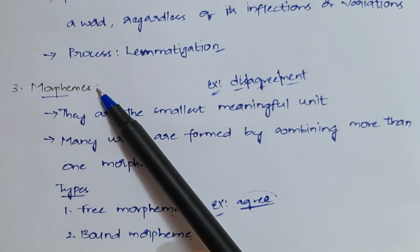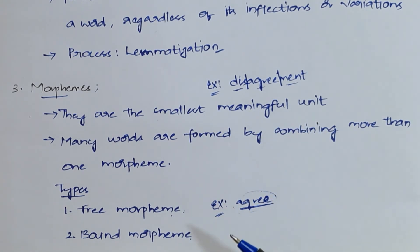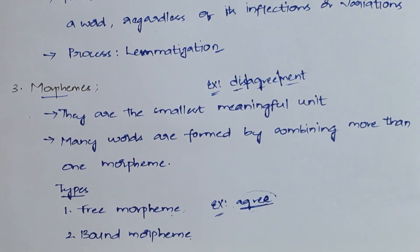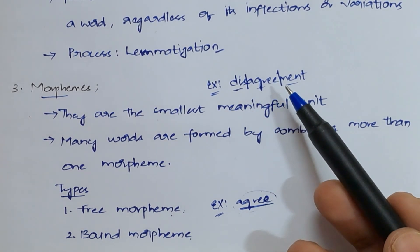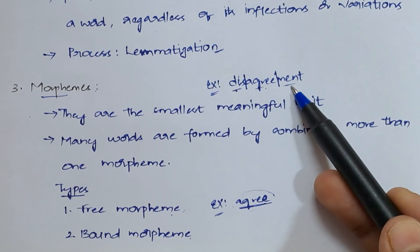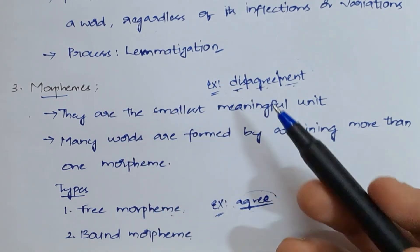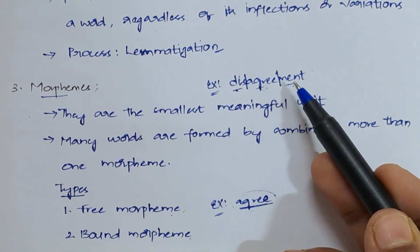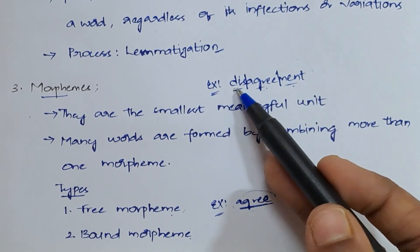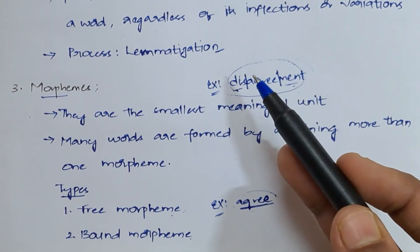Now let's discuss morphemes. Morphemes are nothing but the smallest meaningful unit of any language. By combining morphemes we get one meaningful word. For example, 'disagreement' — combining 'dis', 'agree', and 'ment' gives you one meaningful word. These parts are morphemes, and by combining them you obtain a meaningful word.